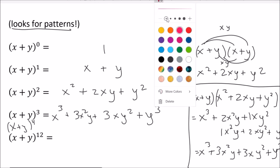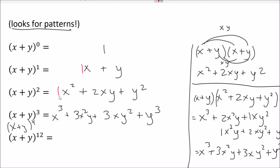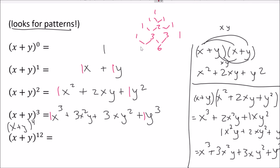Here's what I hope you noticed. The coefficient on the outside is always 1. If we take off the coefficients — the numbers in front — we get 1, 1, 1; then 1, 2, 1; then 1, 3, 3, 1. The outside number is always 1. How do we get the next number? 3 plus 3 is 6, 1 plus 3 gives us 4, 3 plus 1 gives us 4, and the numbers on the outside are always 1.